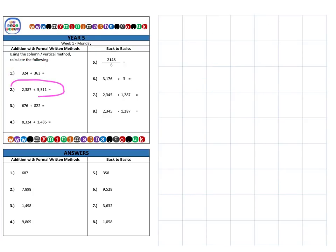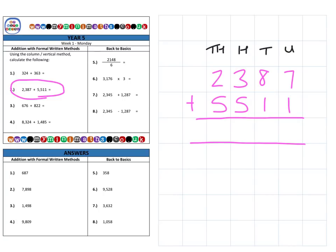Next we're on to question two, which is 2,387, and we're adding 5,511. Now this time it's exactly the same as question one, but of course we have the thousands column as well as the hundreds, the tens, and the units. So if we look at the units to begin with, we've got 7 plus 1, which of course is 8.